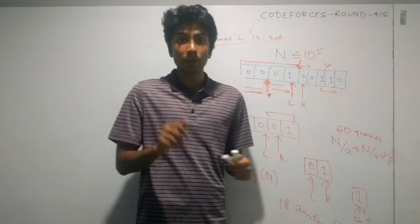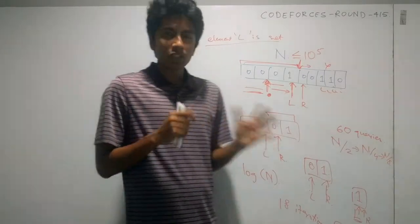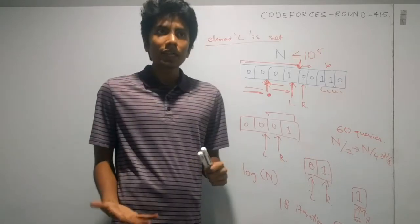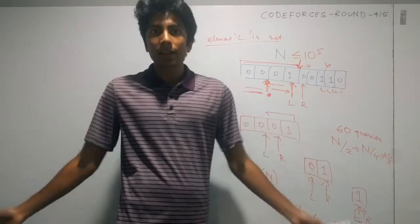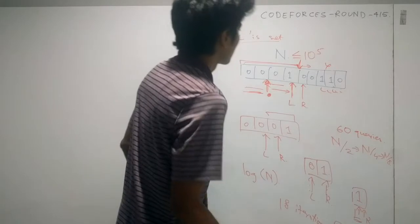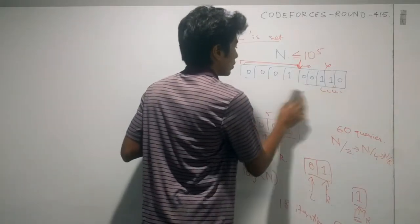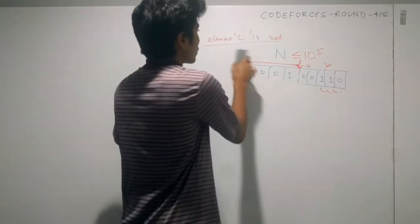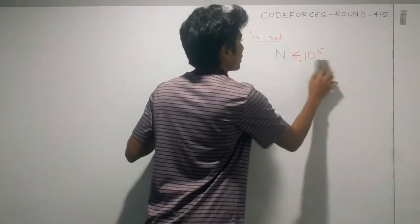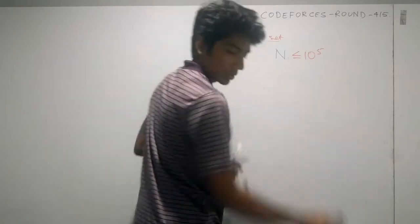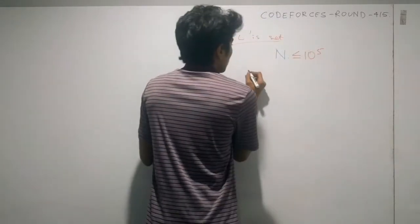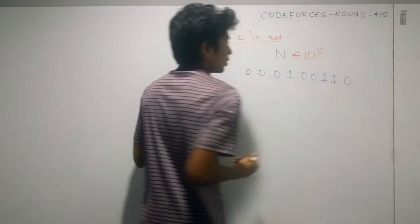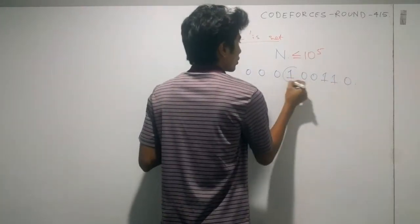Our job is to find two elements, but it's much simpler now. Once you have found that one particular element, what you can do is effectively get rid of that element. Let's say you found the element right here. The array looks something like: 0, 0, 0, 1, 0, 0, 1, 1, 0 — and that found element has been removed from consideration.